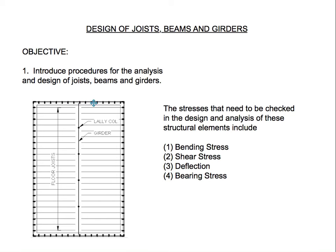Hello everyone and welcome. For this video, I'll be introducing procedures for the analysis and design of joist beams and girders. In order to do that, we're going to check for the required section modulus, the required area for shear, the required inertia for deflection, and the required bearing area for bearing.